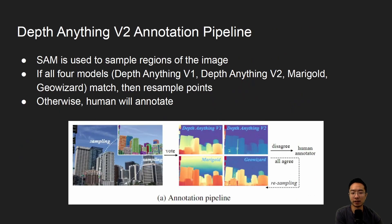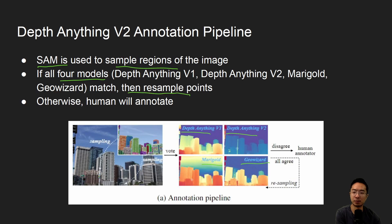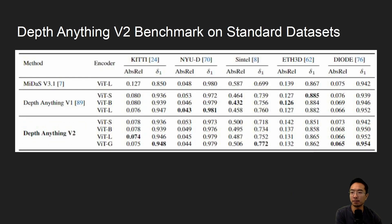The annotation pipeline first uses SAM (Segment Anything Model from Meta) to sample different regions. Then it tests on four models — Depth Anything V1, V2, Marigold, and GeoWizard. If all four agree, they resample points; if there are problems, a human intervenes and annotates. That's how the data pipeline is set up.